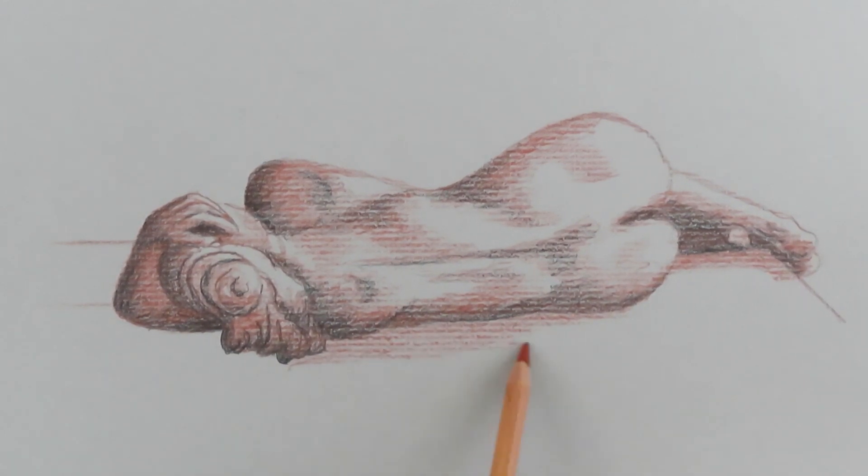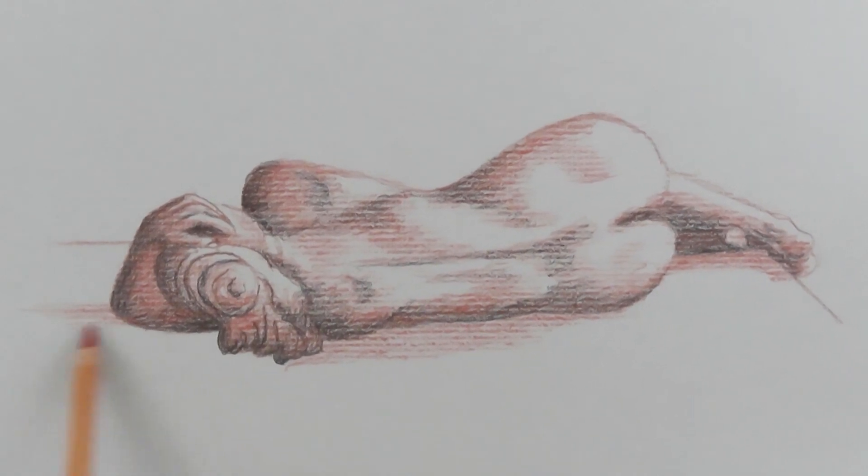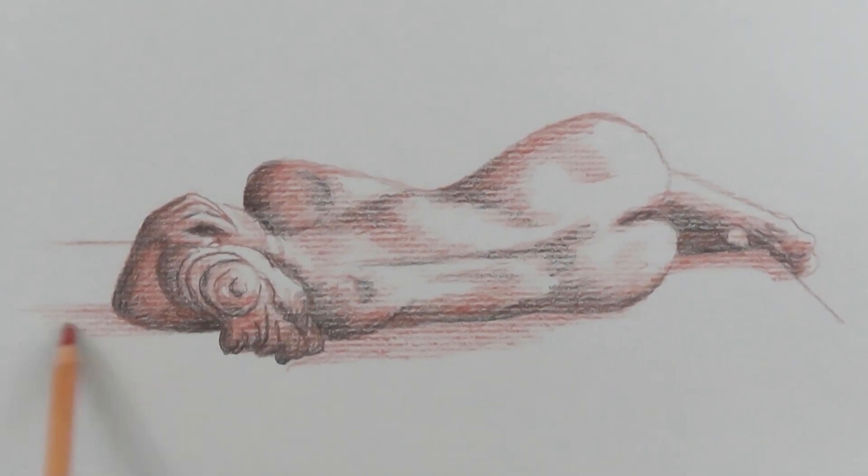So I just move in one direction. In this case, I'm moving horizontal across the page, where her elbow touches the area here. We end up with shadow moving in this direction.